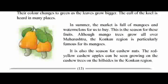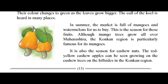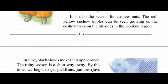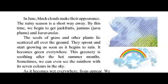In summer, the market is full of mangoes and watermelons. Although mango trees grow all over Maharashtra, the Konkan region is particularly famous for its mangoes. It is also the season for cashew nuts — the red-yellow cashew apples can be seen growing on cashew trees on the hillsides in the Konkan region. In June, black clouds make their appearance and the rainy season is not far away. By this time, we begin to get jackfruits, jamuns, java plums and caravandas.